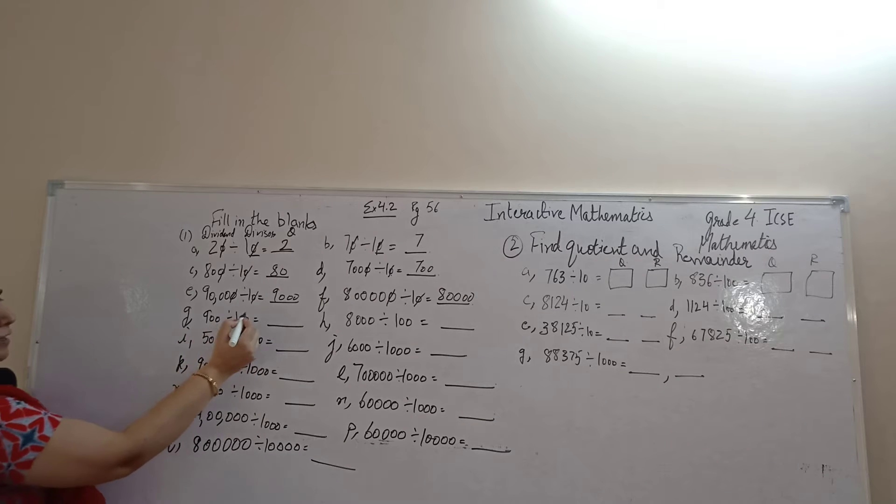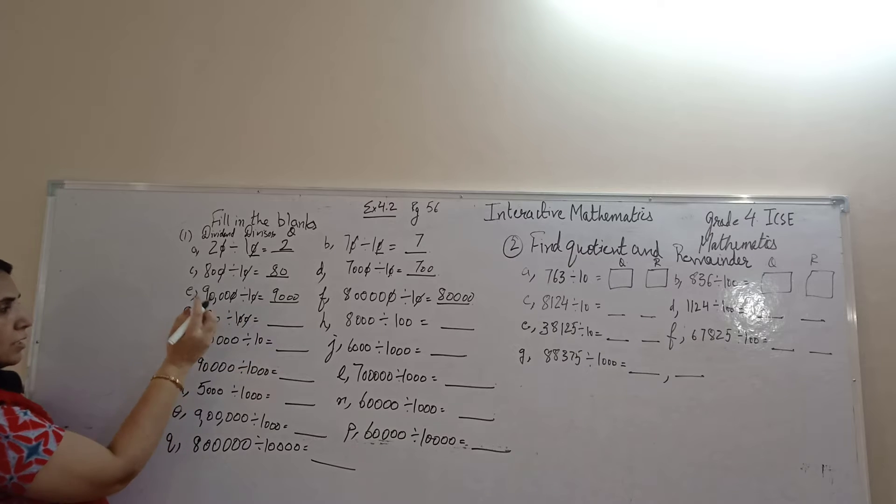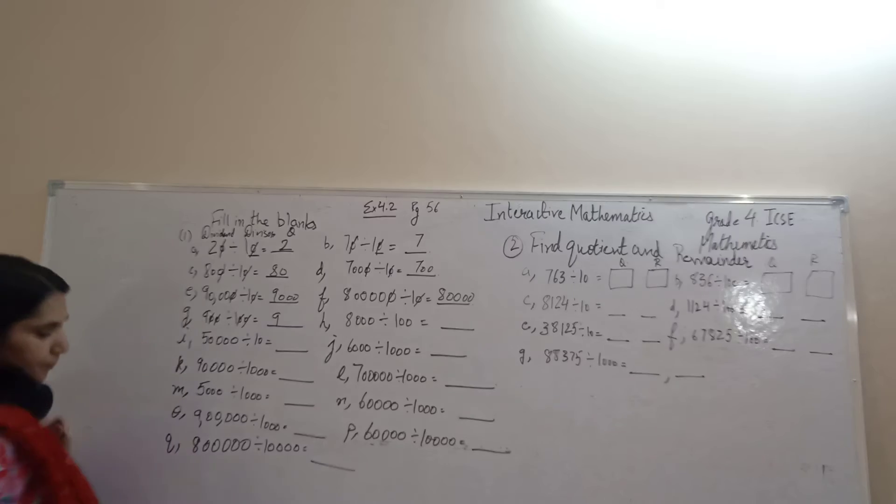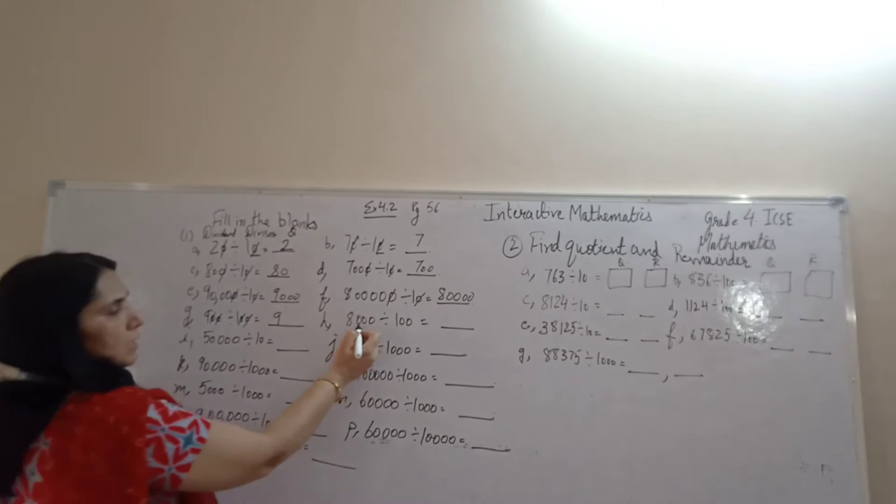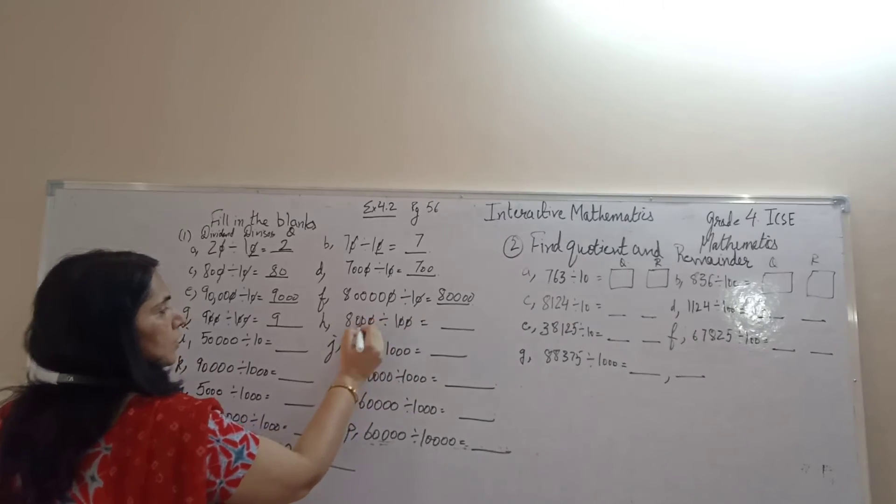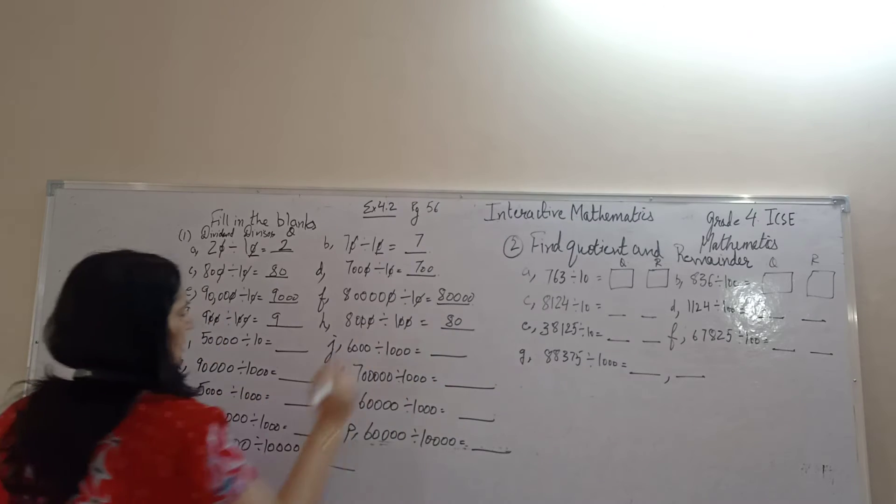900 divided by 100. Our divisor is having 2 zeros. So we will remove 2 zeros from here. It is 9. 8,000 divided by 100. 2 zeros removed. 80.